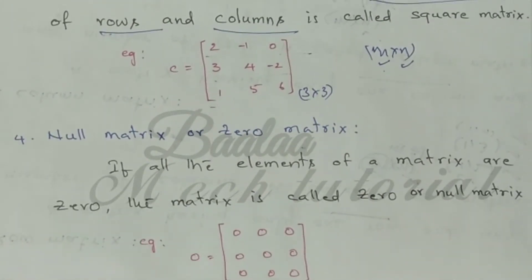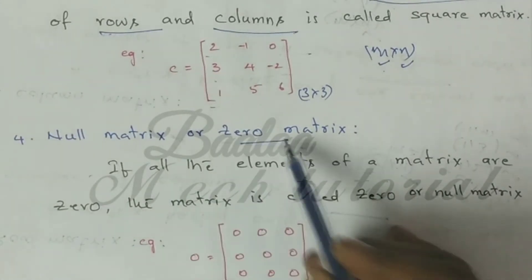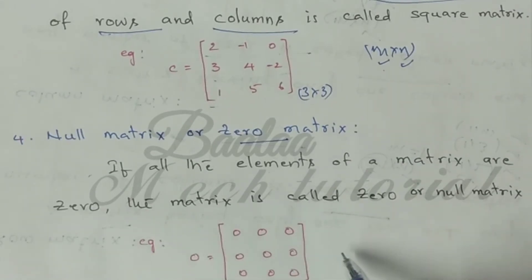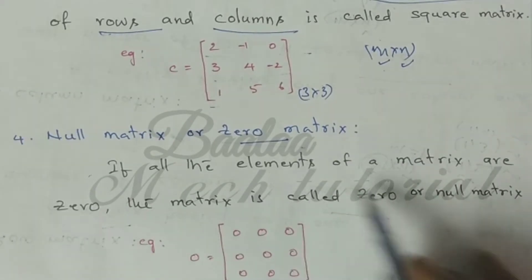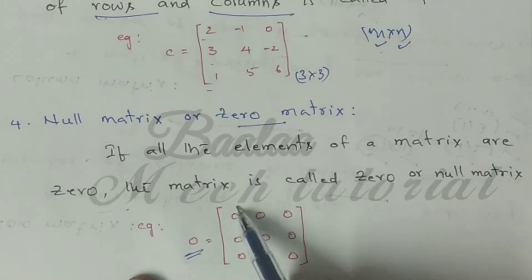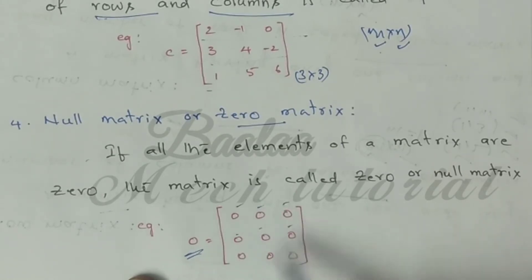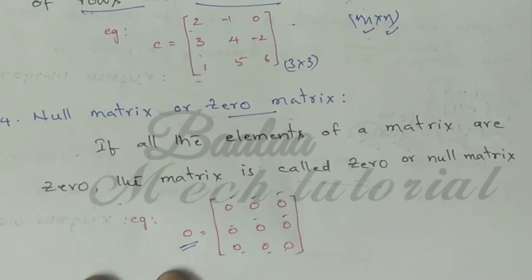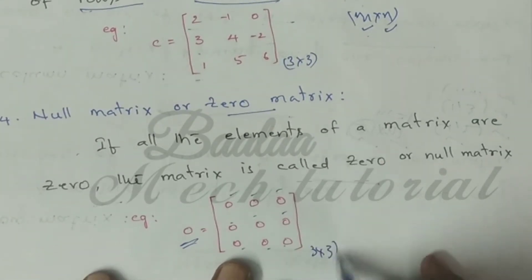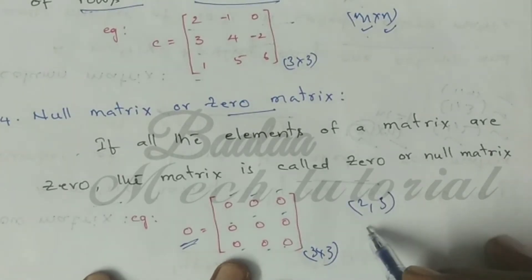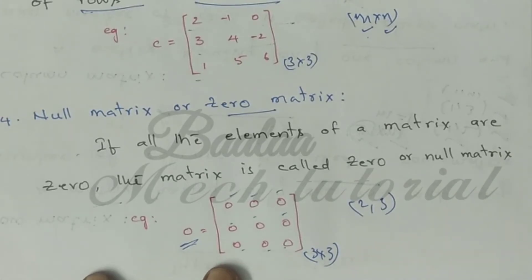Next one is null matrix, also called zero matrix. If all elements of a matrix are zero, it is called a null or zero matrix. It can be of any order — not only 3 by 3, but also 2 by 3 or any order — as long as all the elements are zero.